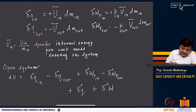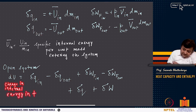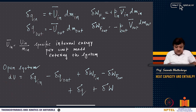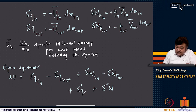The change in energy du in the open system equals the sum: delta Q in minus delta Q out, plus delta W in minus delta W out. Delta Q is the heat input to the open system, and delta W is the work done on or by the open system, with sign depending on convention.